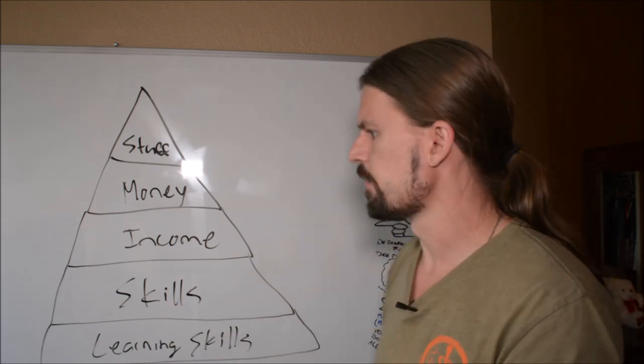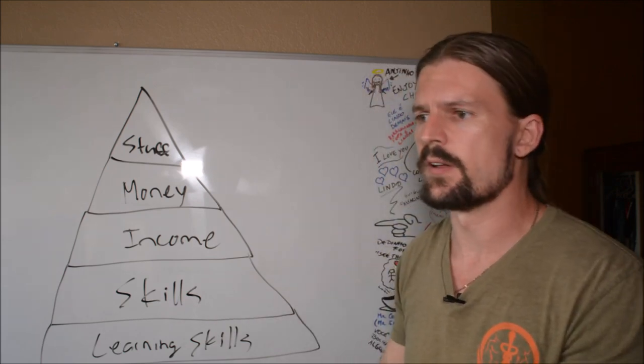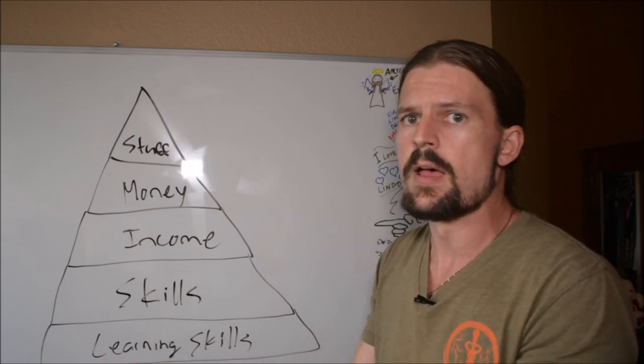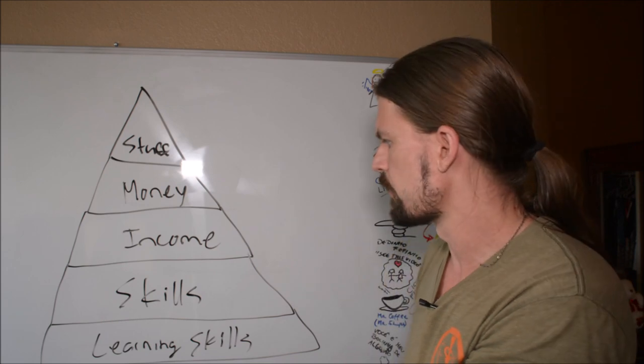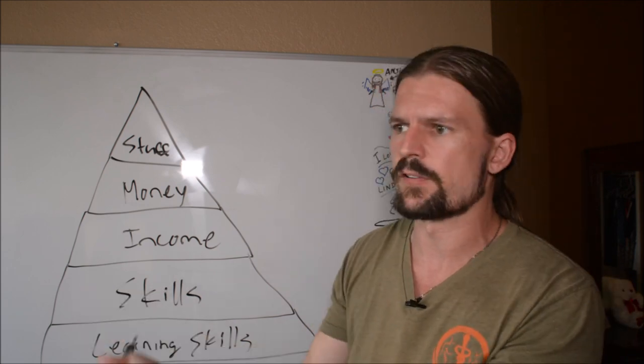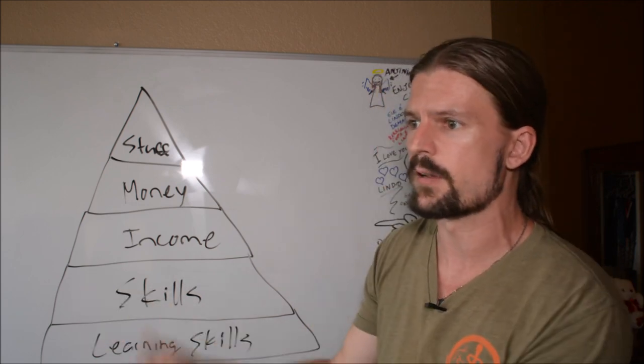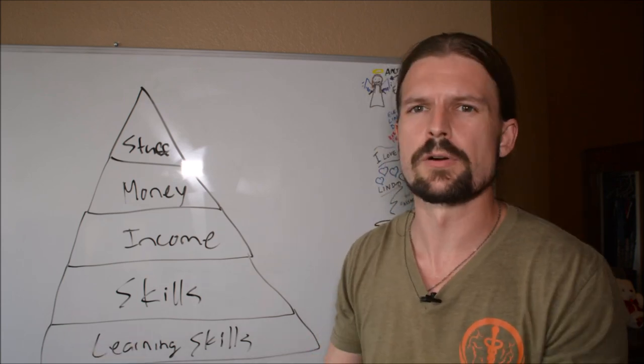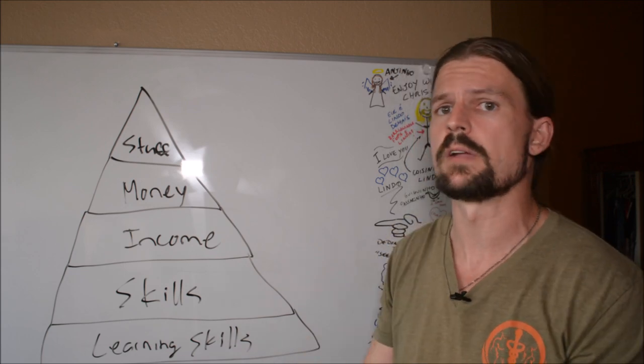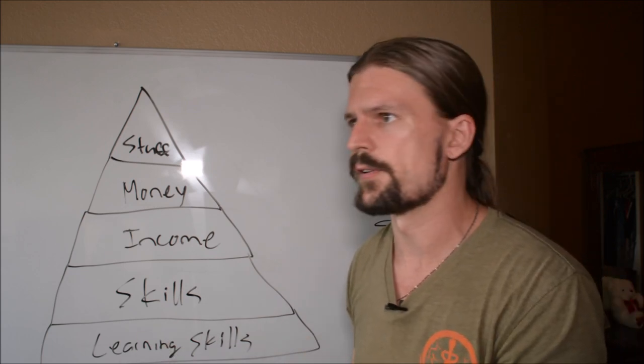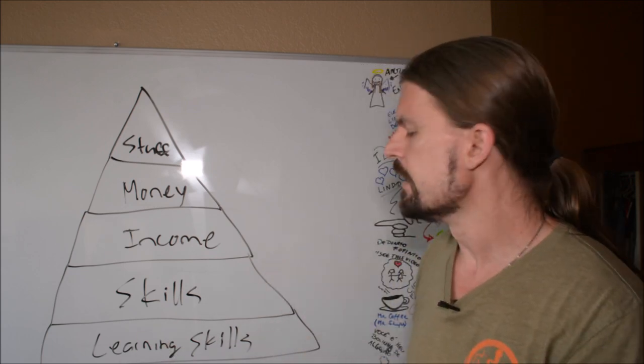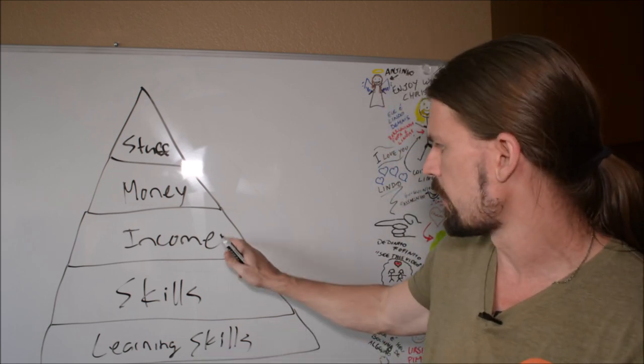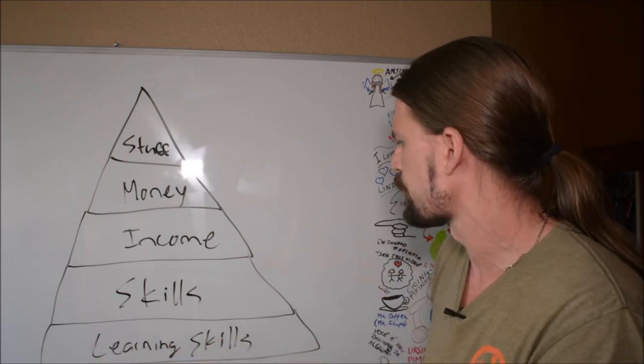Then on the skills level, you can learn new skills. You can update your existing skills. So if you know an old programming language, you could become familiar with a new programming language or you could diversify your skills so that you're learning something completely different. Maybe you learn how to garden or how to farm or you learn how to fix cars or you learn how to do marketing. There's any number of skills that you could learn. And the more skills that you have, the more options you have to create an income source should your current income source fail.